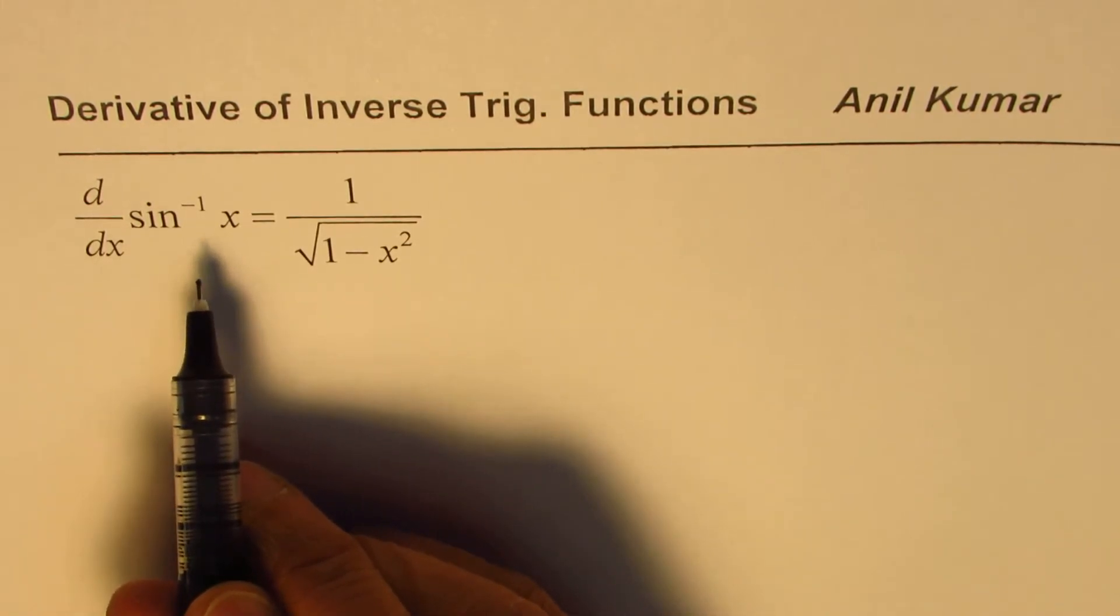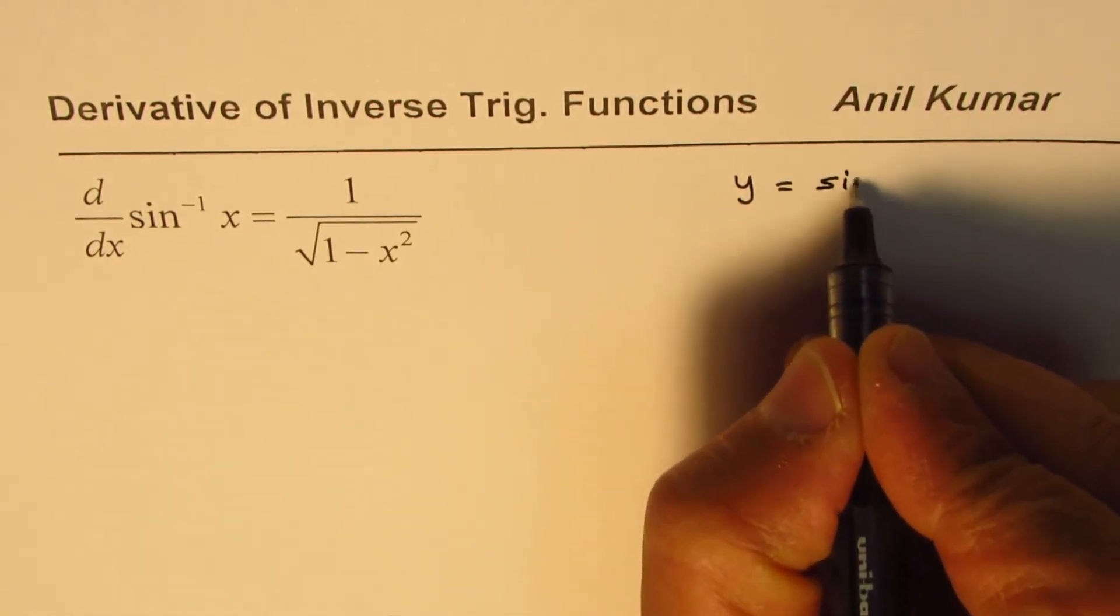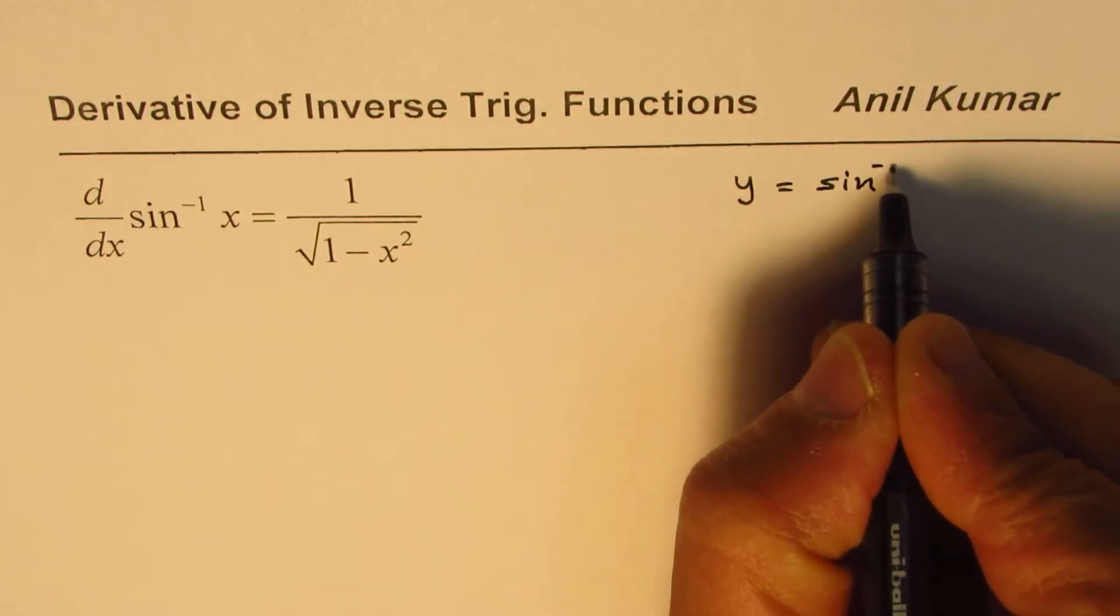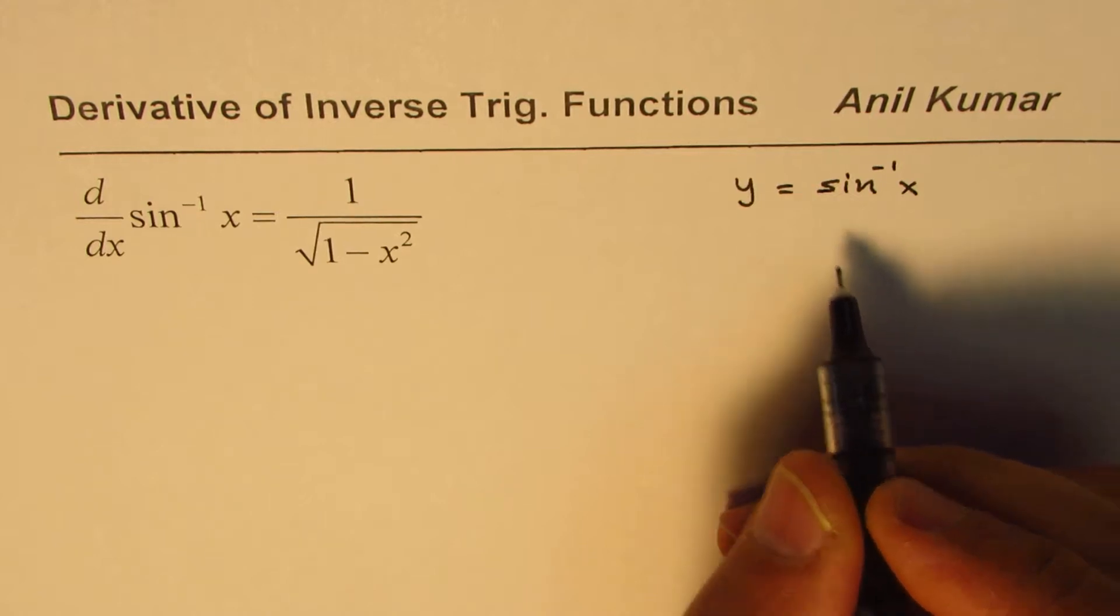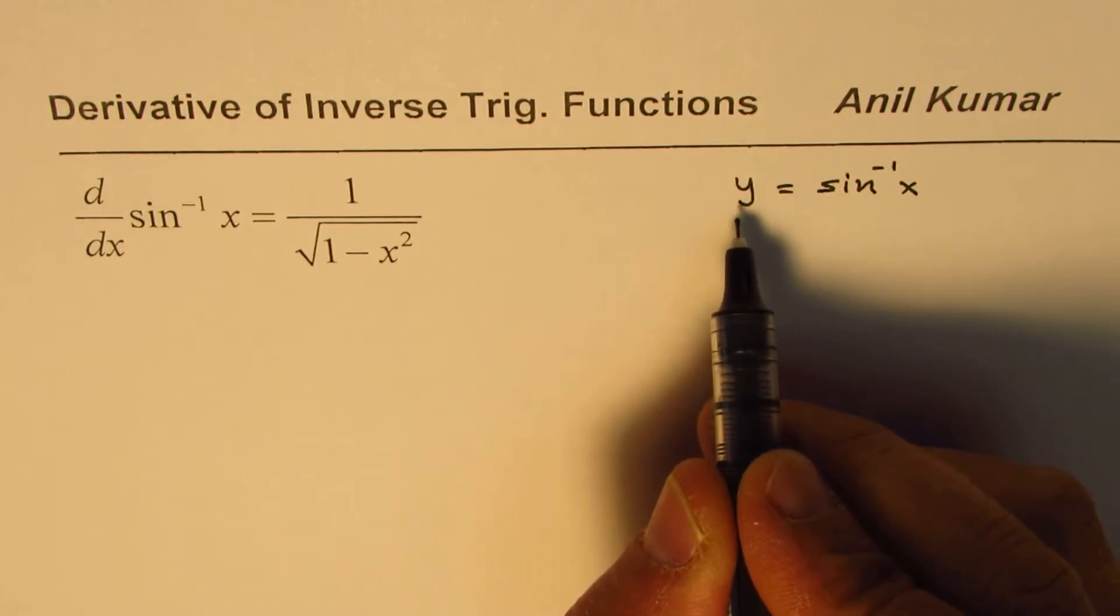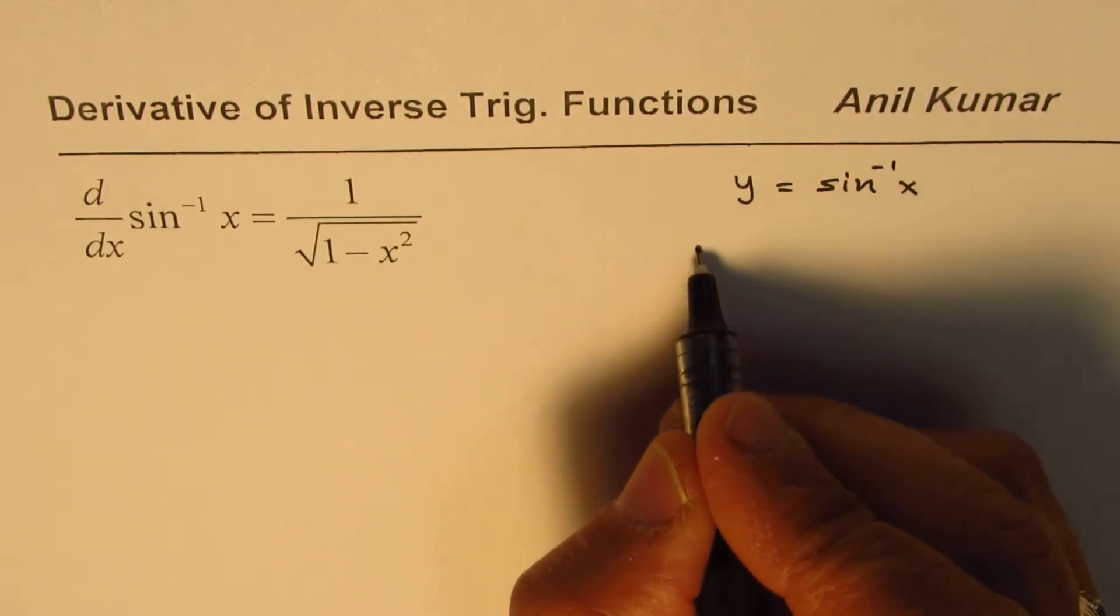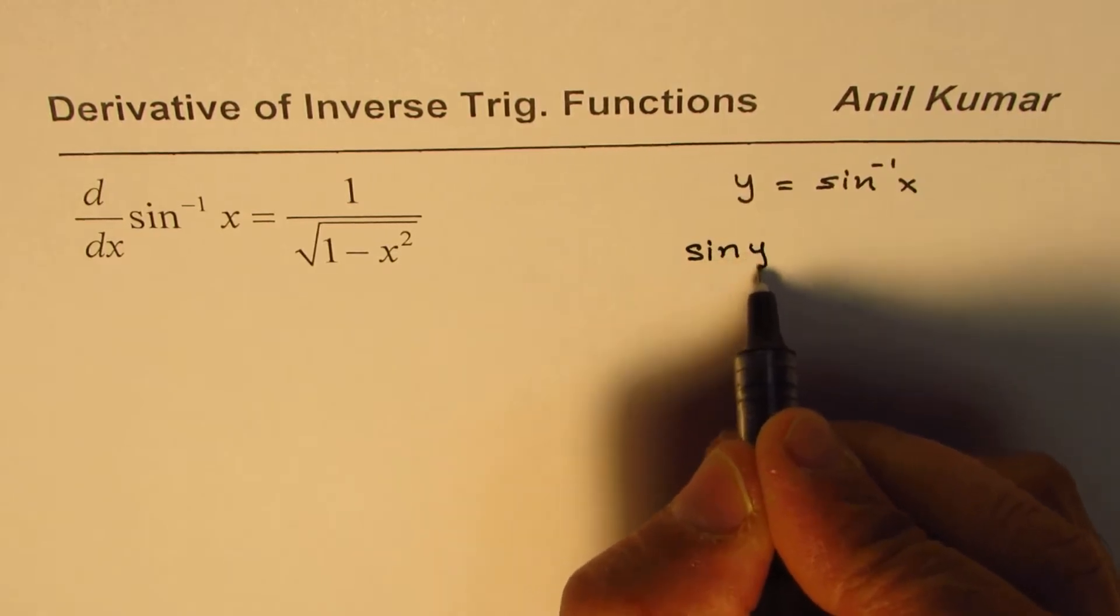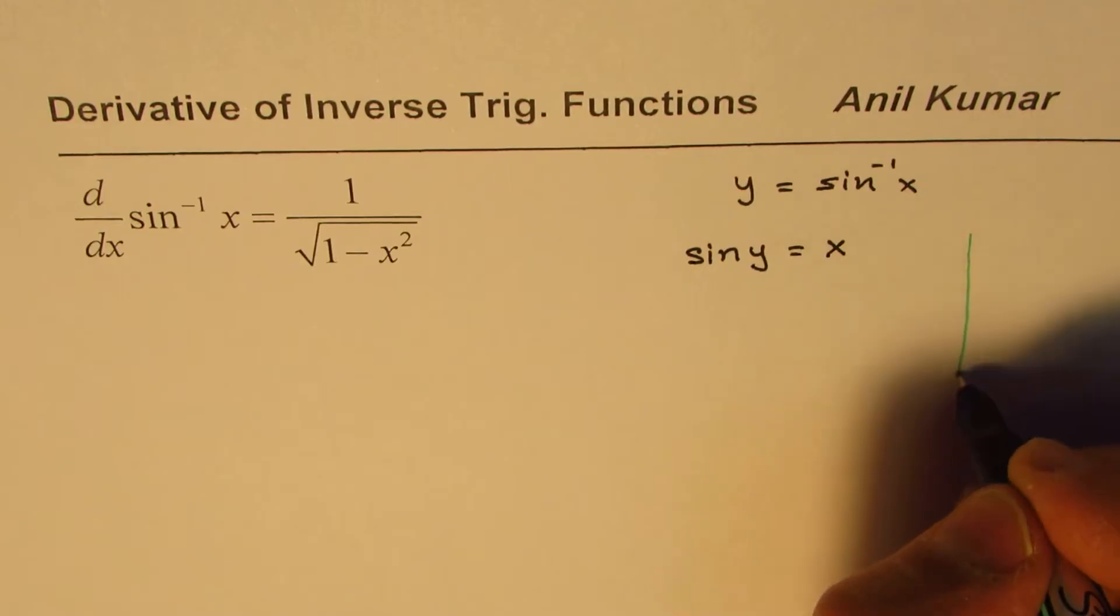Now, whenever we write, we can write this as y equals sine inverse x. So whenever you write like this, it really means that y is the angle. We are expecting the angle, and it's always in radians. We can actually rearrange this and write as sine y equals x. Now, if sine y is x, it reminds you of a triangle.